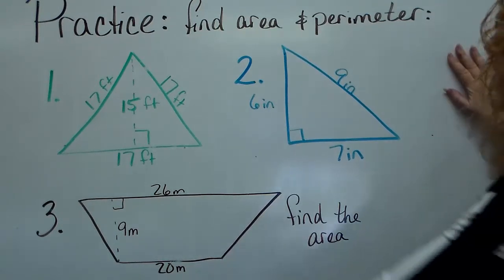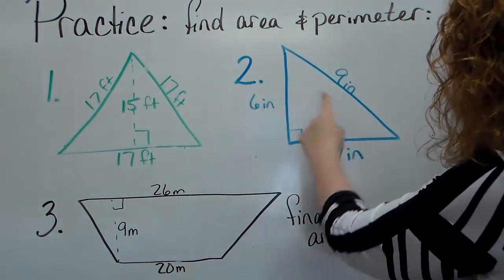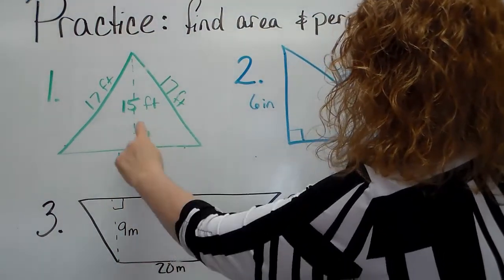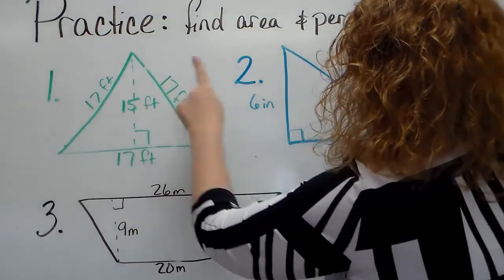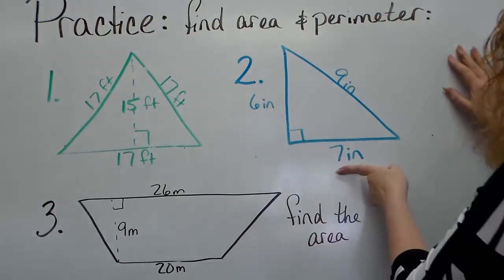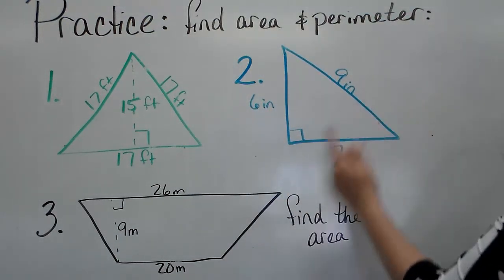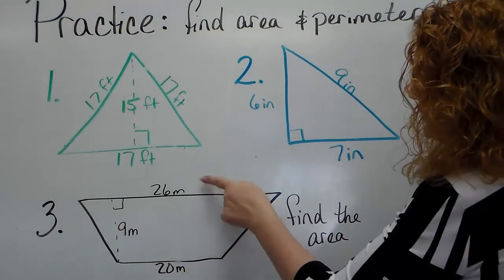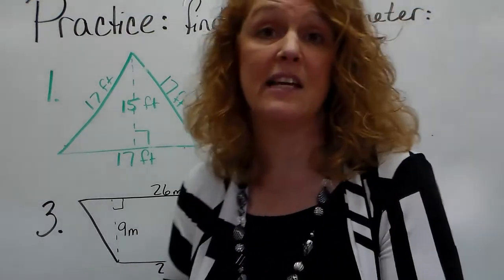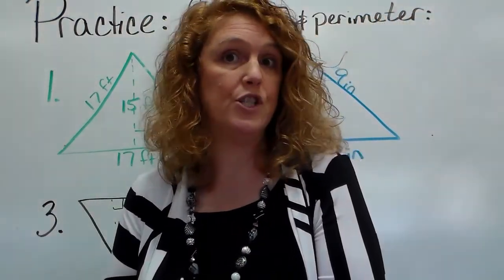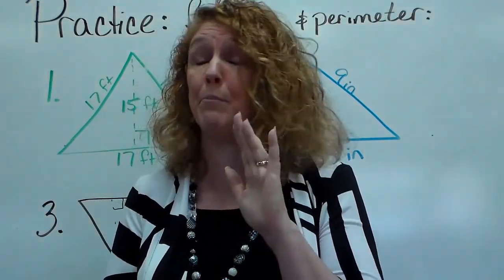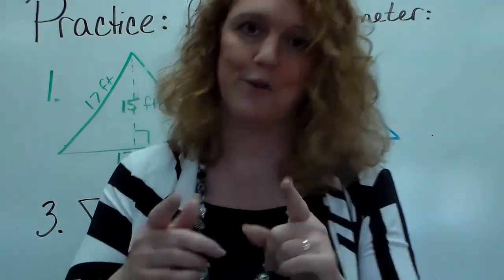Your practice: you're going to find the area and the perimeter of these two triangles and then the area of this trapezoid. If you are having trouble reading it, this is 17 by 17 and 17 with a height of 15. This is 6 and 7 with a diagonal of 9. These parallel sides are 20 and 26 with a height of 9. Okay, work those out, put hazard signs next to things you don't understand. Try the trapezoid, don't let it scare you. It's not that bad - just find the average and then multiply it by the height, and I will talk to you tomorrow. So good luck and take care.